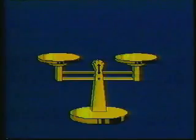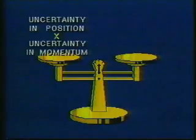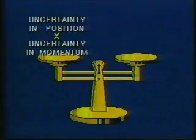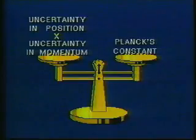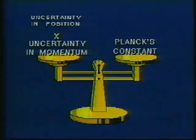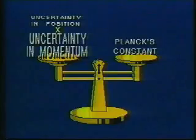Mathematically, the uncertainty principle is this: the uncertainty in position times the uncertainty in momentum equals Planck's constant. As the uncertainty about one shrinks, the uncertainty about the other has to grow to keep the equation balanced.